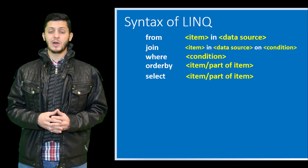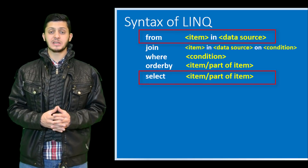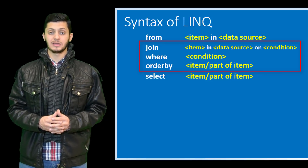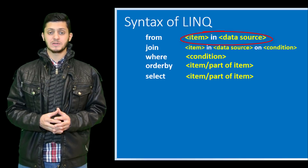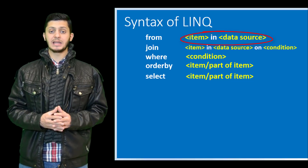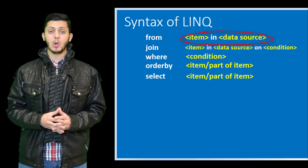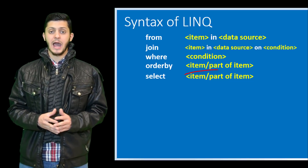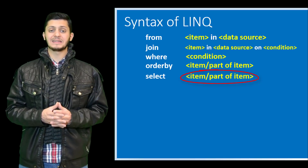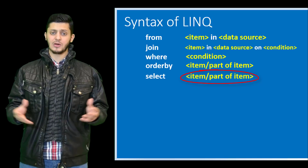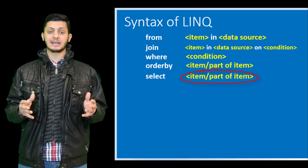Its syntax includes two required clauses: from and select. Optional clauses include join, where, and order by. The from clause references an item in a data source — similar to an element in any array of integers or an object in a list of class objects. The select clause specifies the item or part of the item to be projected. For example, you may want to select only the name and address properties in a class.